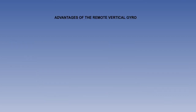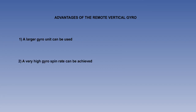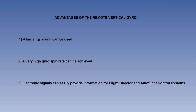Locating the gyro unit in a remote location has advantages. Firstly, a larger gyro unit can be used as the unit can be located away from the flight deck — a larger gyro gives greater rigidity and therefore less precession and more accuracy. Secondly, a very high gyro spin rate can be achieved, giving greater rigidity and accuracy. Thirdly, electronic signals can be easily used to provide information for flight director and autoflight control systems. This concludes the lesson.